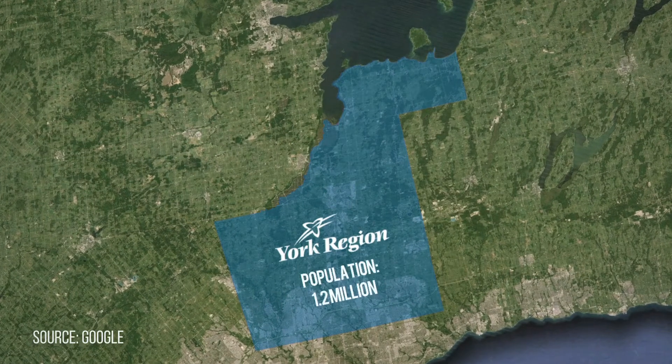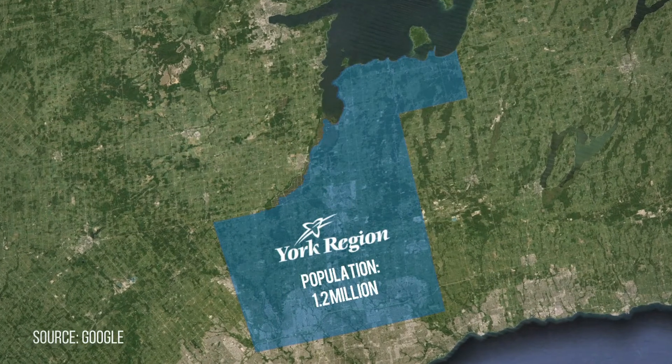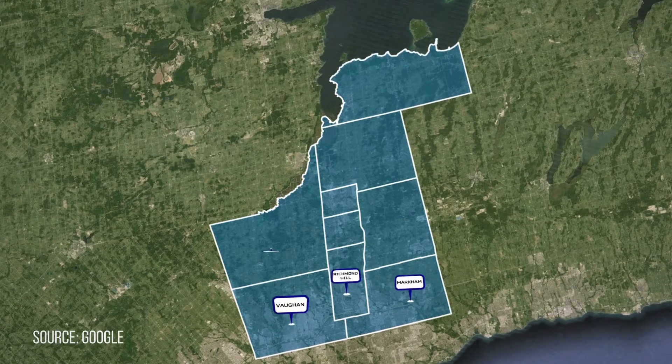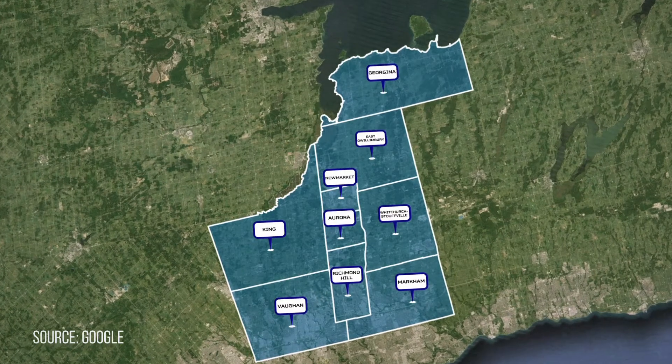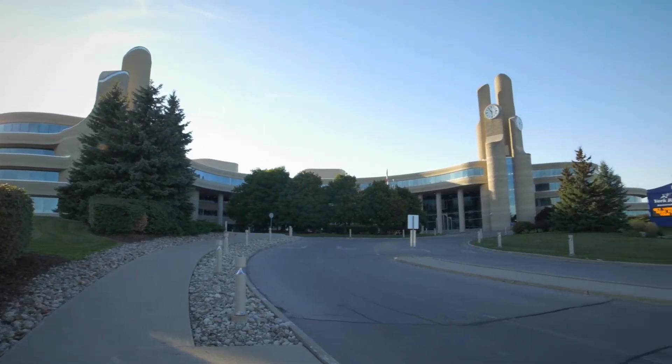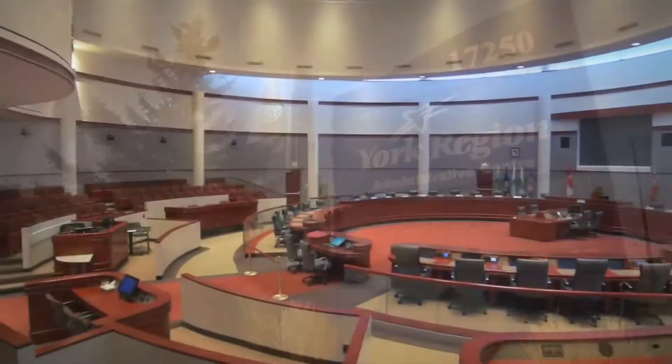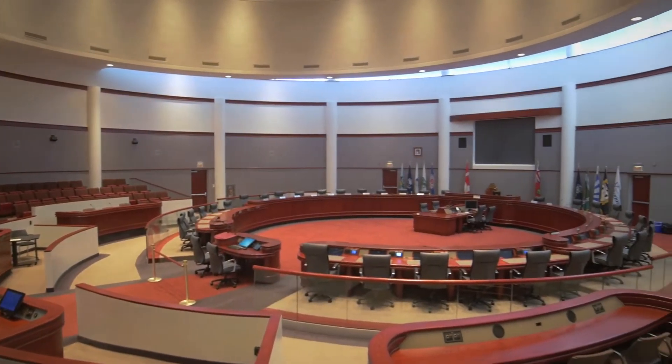York Region is situated immediately north of the city of Toronto. We consist of nine local municipalities in addition to our regional municipality. The Enterprise GIS system is absolutely essential not only to us as we conduct regional business — from emergency services all the way to transit services — but equally important to our local municipalities, to our public sector partners in having a one-window opportunity to better inform our residents, our decision makers, and others in our community.